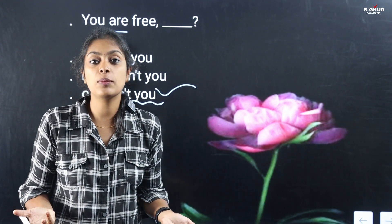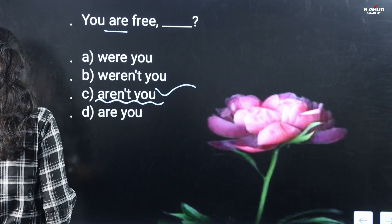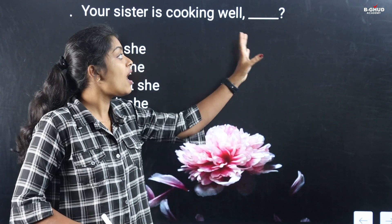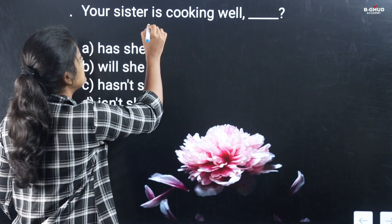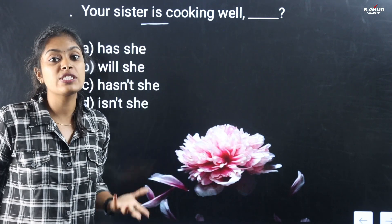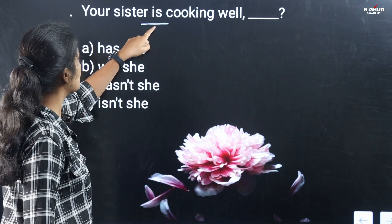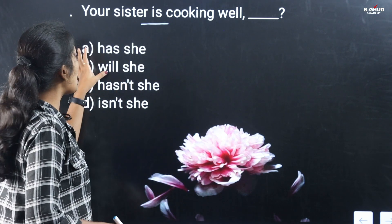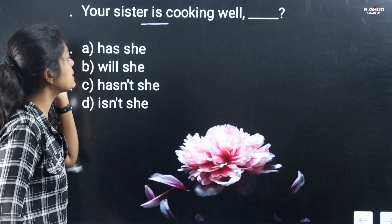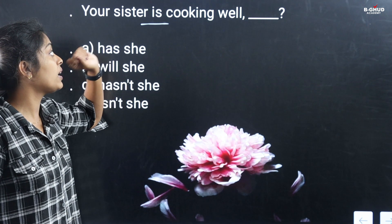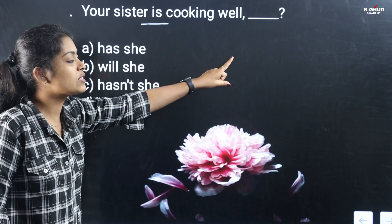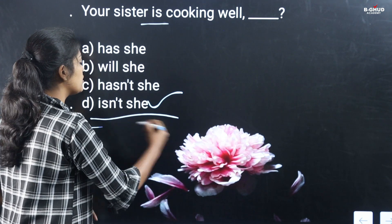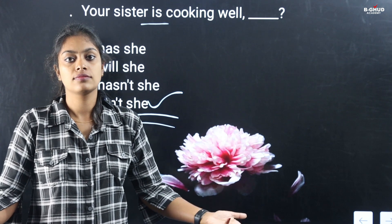It's not easy! Do you want to learn more? Next example: 'Your sister is cooking well.' The sentence is positive, so the question tag is negative. Your sister — she — the auxiliary verb is 'is', so the question tag is 'isn't she?' Is this positive? Of course, so the question tag is negative — 'isn't she?'